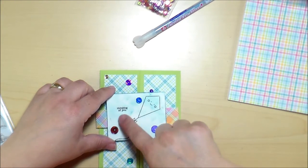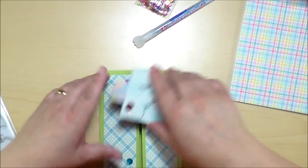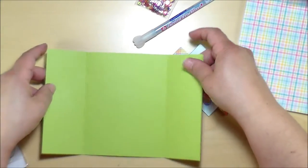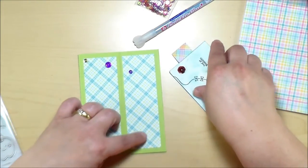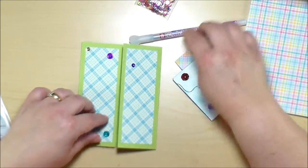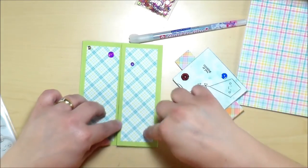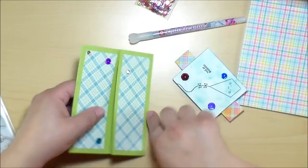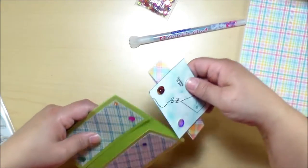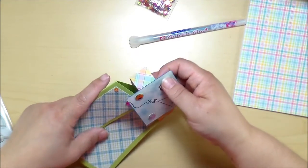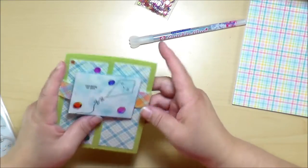Then I used the stamp set to stamp on the kite and then the sentiment thinking of you. And then I just left it plain on the inside. And again, when I used this glue pen, I don't know if it's going to hold these sequins all that well because that's what was holding that sequin on and it fell off. So I'm going to put another one on.